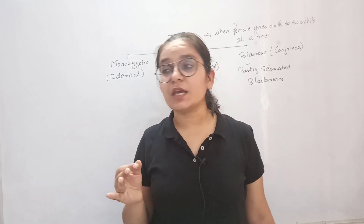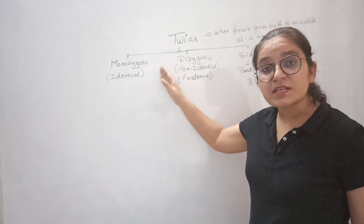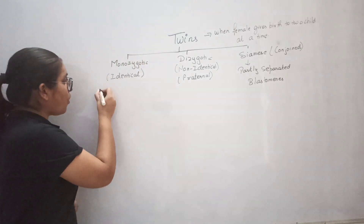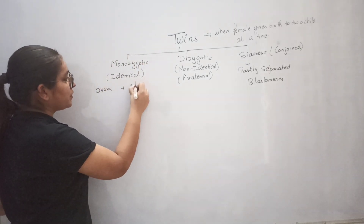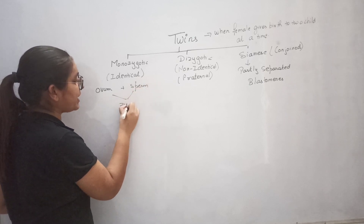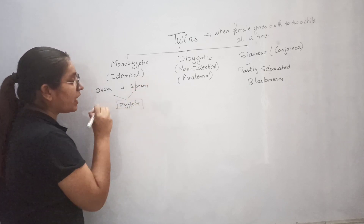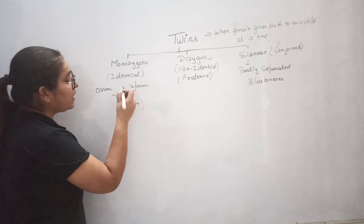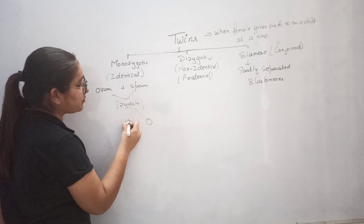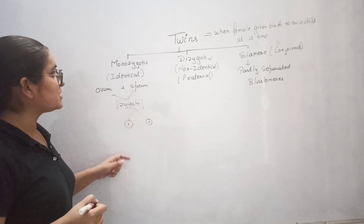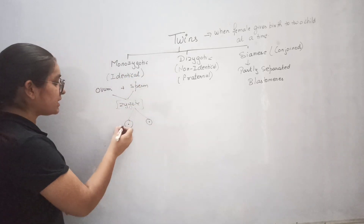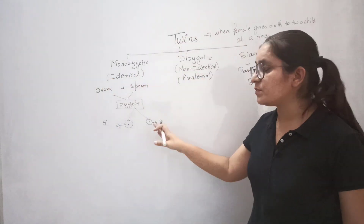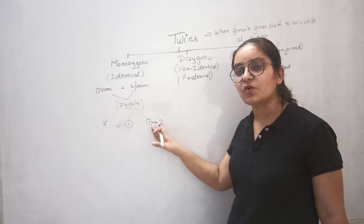But how are twins produced? Here we will talk about monozygotic twins first — how the production of monozygotic twins is occurring. So ovum and sperm fuse and form a zygote. The zygote undergoes cleavage and produces the embryo. But if a division happens in the zygote before cleavage, it produces two different zygotes — that is called monozygotic twins. From one, one child is produced, and from the other zygote, another child is produced, because two embryos will be produced.